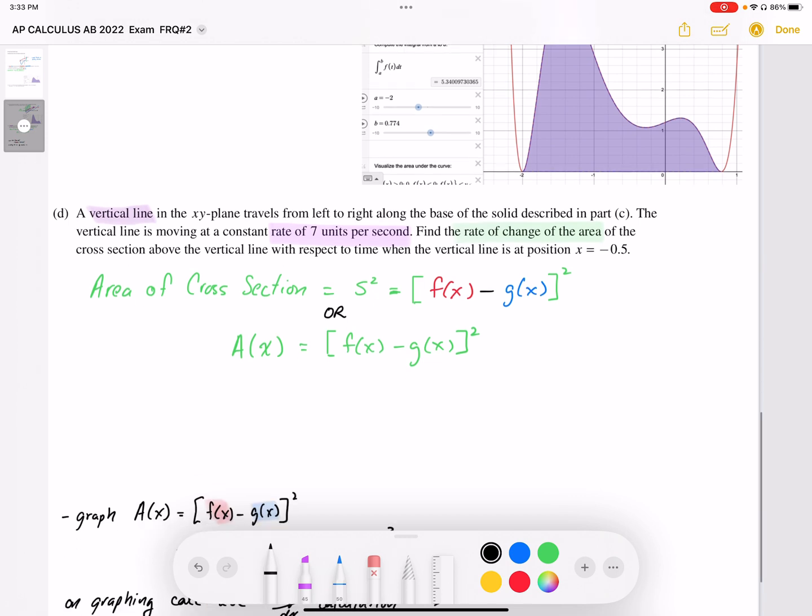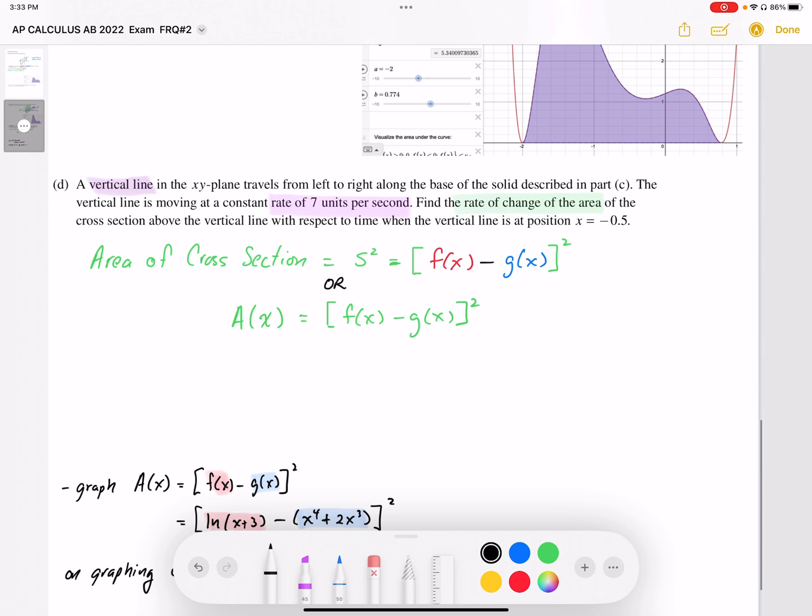Now we're being asked to find the rate of change of the area. So we want to find dA over dt. So we need to generate a dA by dt. So I have an A(x) function.